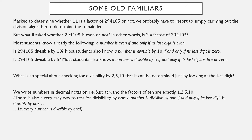When we write numbers in decimal notation, the factors of 10 are exactly 1, 2, 5, and 10. Everything is divisible by 1, so otherwise 2, 5, and 10 have special divisibility tricks just related to the last digit when we are writing numbers in decimal notation.